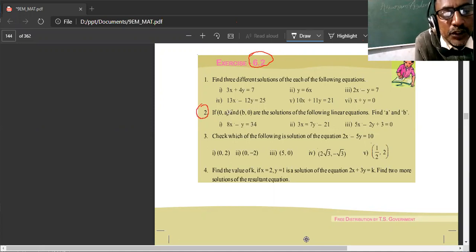If (0,a) and (b,0) are the solutions of the following equations, find the a and b value. This is the best example.